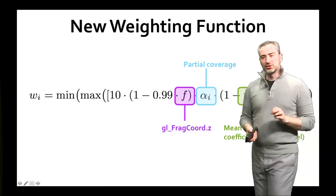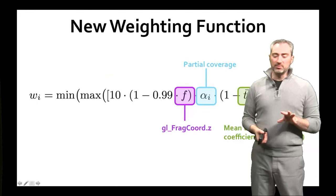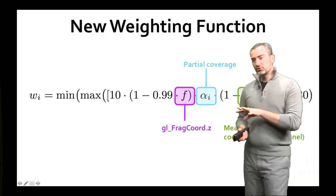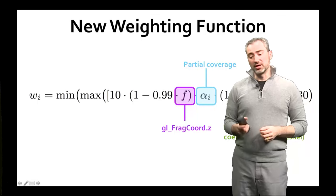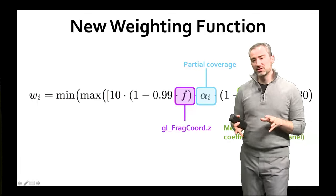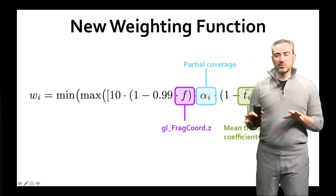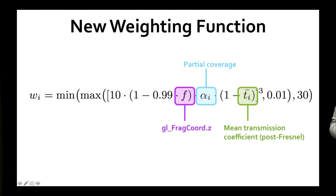There is also a new weighting function. This is what makes phenomenological transparency more robust than previous weighted blended transparency methods. The major elements affecting each surface's contribution are: it falls off with depth (gl_FragCoord.z), with partial coverage, and with the mean amount of transmission going through the surface.